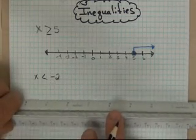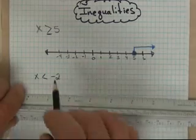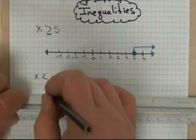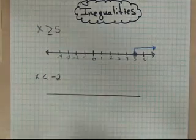So we start off the same way. We want to draw our number line and have an appropriate scale. We want to show that the number line extends both directions.